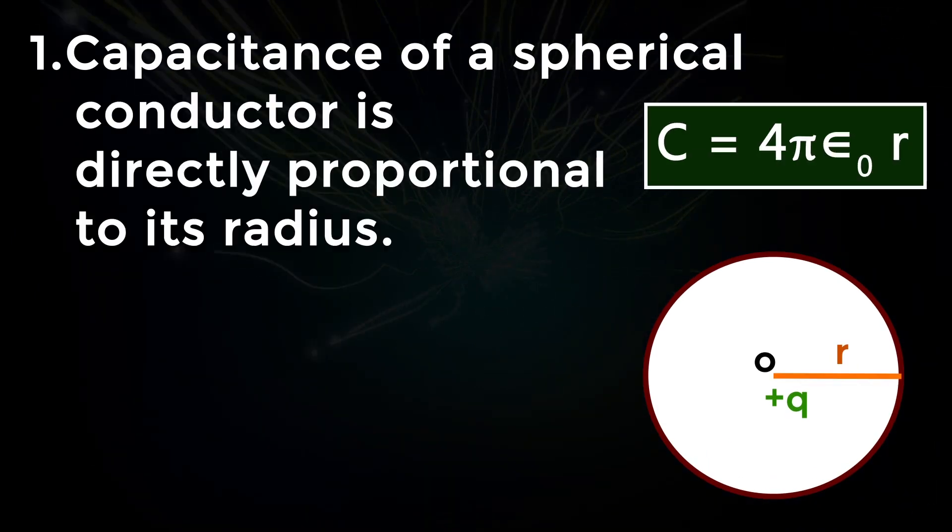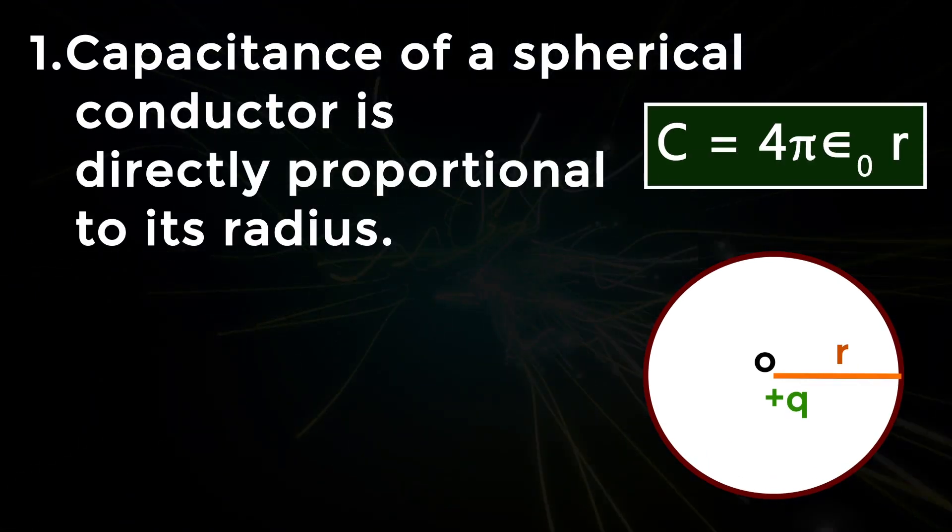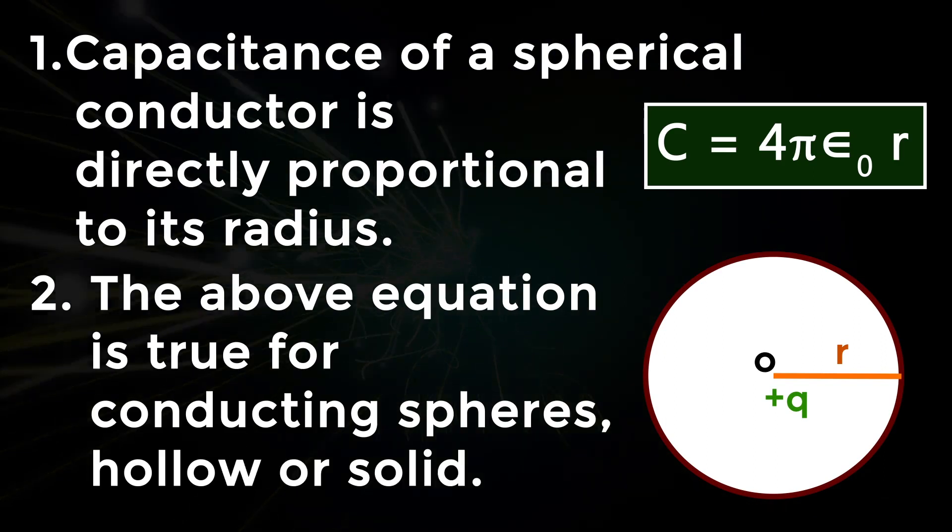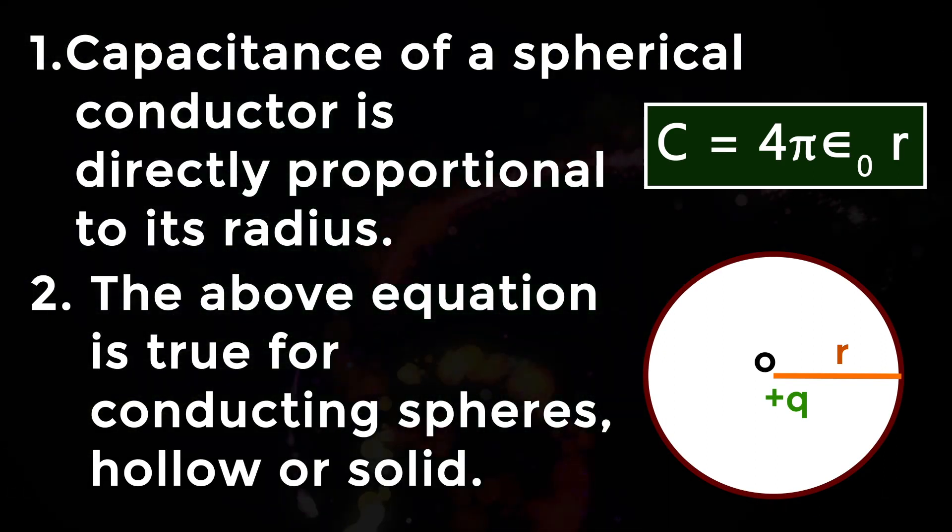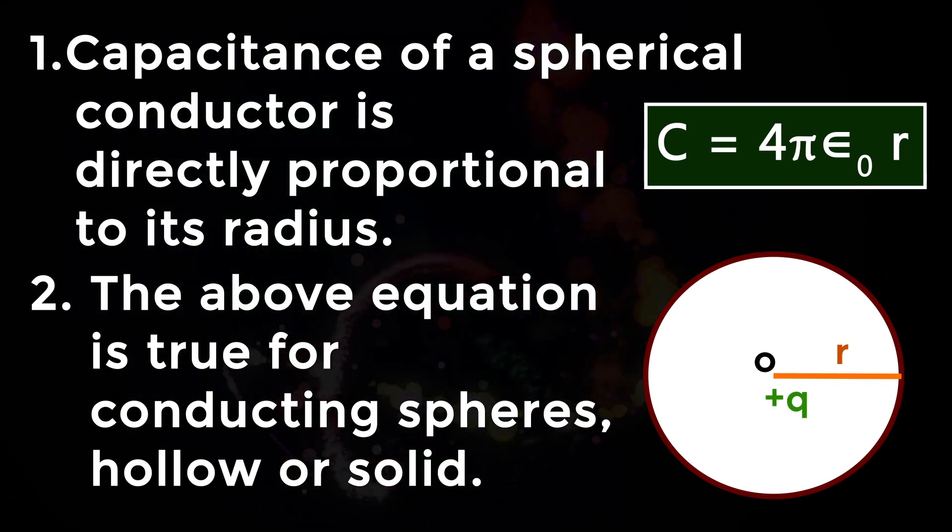Number one: Capacitance of a spherical conductor is directly proportional to its radius. Two: The above equation is true for conducting spheres, hollow or solid.